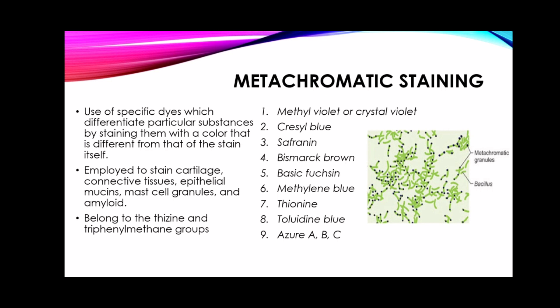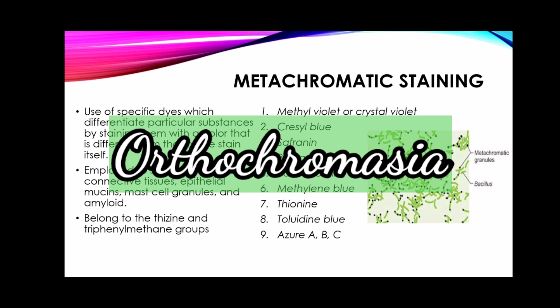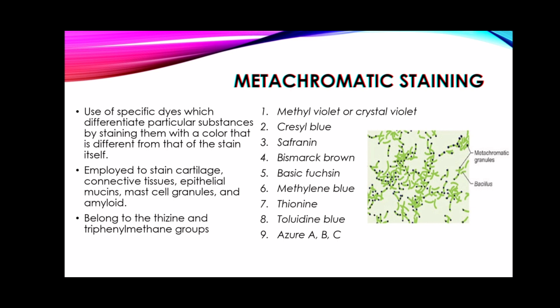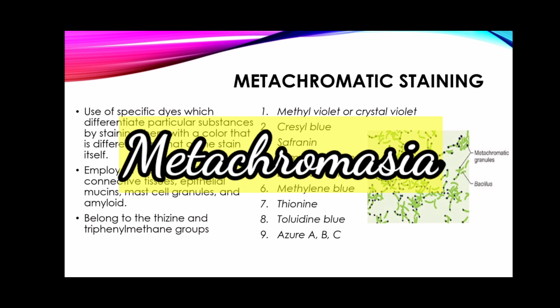Most dyes stain tissues orthochromatically, meaning whatever color the stain is, the tissue will take up that same color. With metachromatic staining, specific dyes differentiate particular substances by staining them with a color totally different from that of the stain itself — this is called metachromasia. Tissue components combine with these dyes to form a different color from the surrounding tissue.